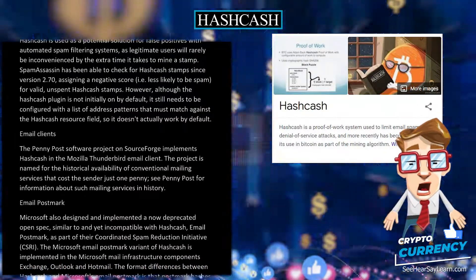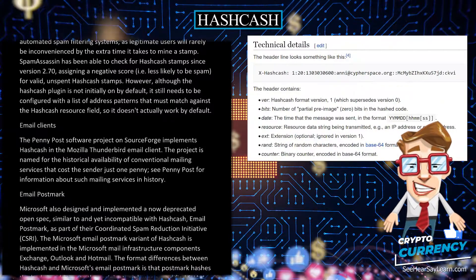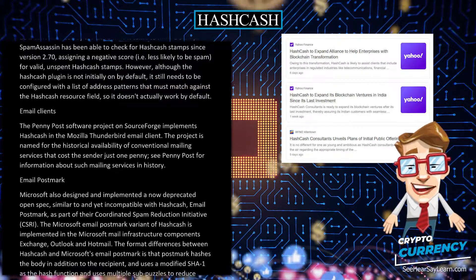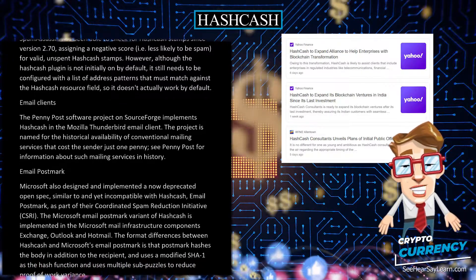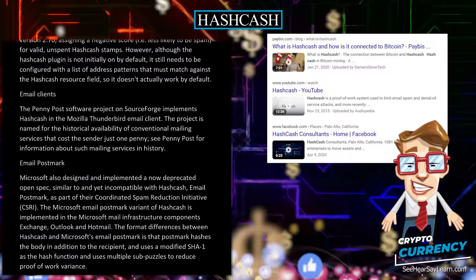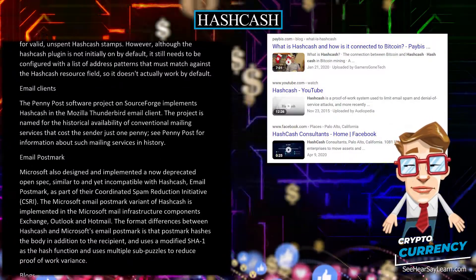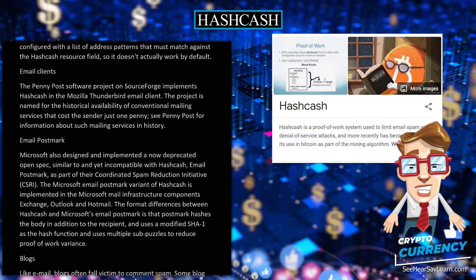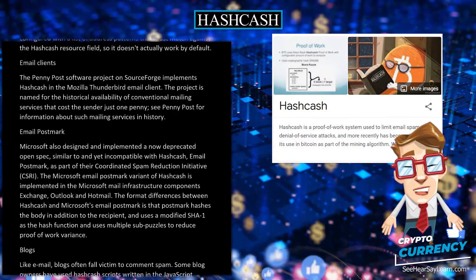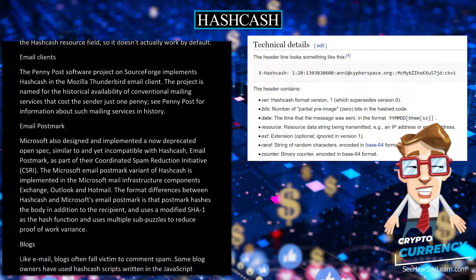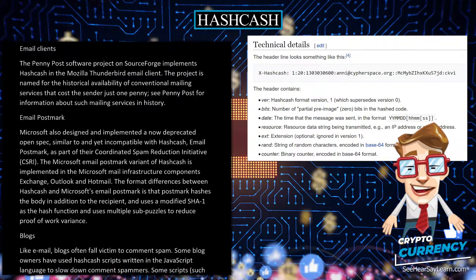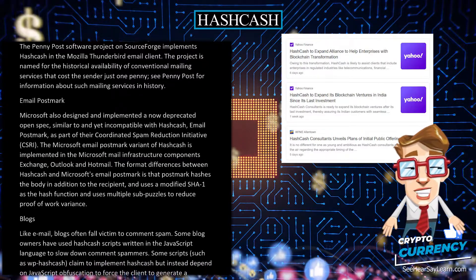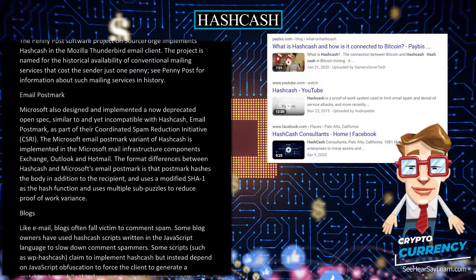Email Postmark. Microsoft also designed and implemented a now deprecated open spec, similar to yet incompatible with hashcash, called email postmark, as part of their Coordinated Spam Reduction Initiative (CSRI). The Microsoft email postmark variant of hashcash is implemented in Microsoft Mail Infrastructure Components, Exchange, Outlook, and Hotmail. The format differences between hashcash and Microsoft's email postmark are that postmark hashes the body in addition to the recipient, uses a modified SHA1 as the hash function, and uses multiple sub-puzzles to reduce proof-of-work variants.